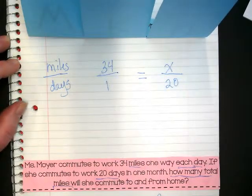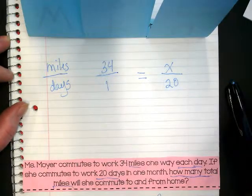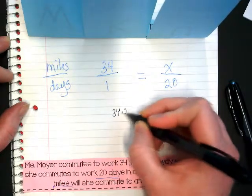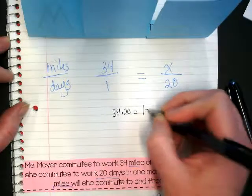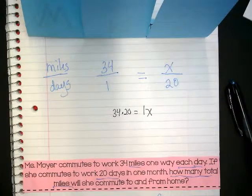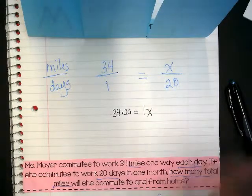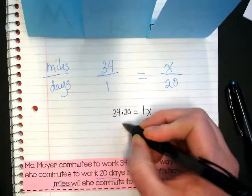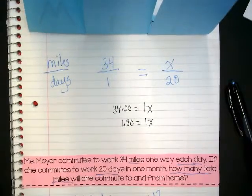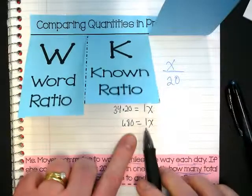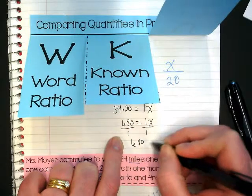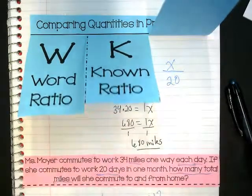Now that it's set up as a proportion, we can cross multiply to solve. So if I'm cross multiplying this, I would do 34 times 20 equals 1x. 34 times 20 gets us 680 equals 1x. We're lucky that in this problem, this number here is a 1, because we're dividing by the 1, which means we're just going to come up with 680 miles as the answer to our problem.